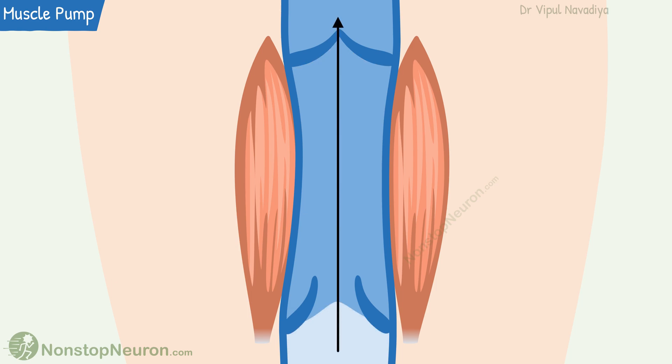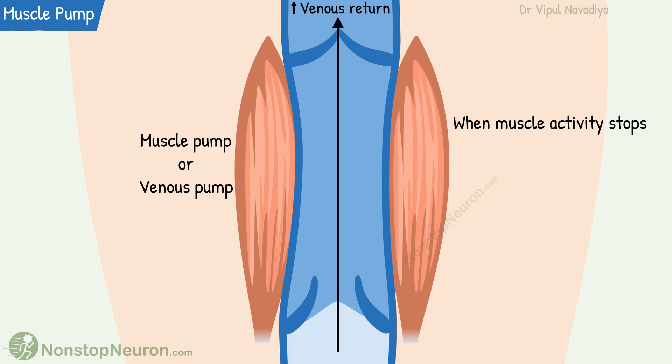Thus the ongoing activity of adjacent muscles pumps the blood towards the heart, increasing venous return. This pumping is called a muscle pump or venous pump. When the muscle activity stops, this pumping also stops. In summary, increased activity of adjacent muscles increases the venous return by coordinated movement of the venous valves.